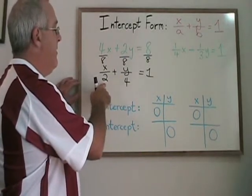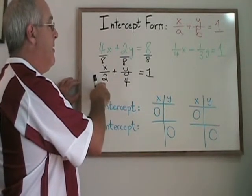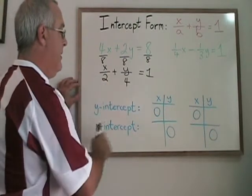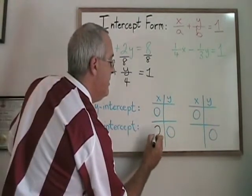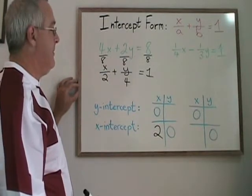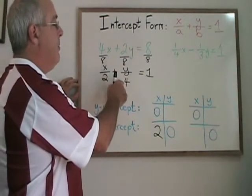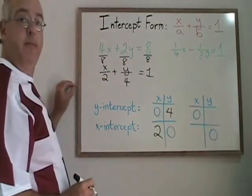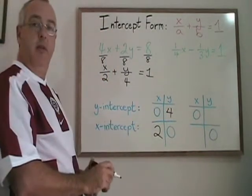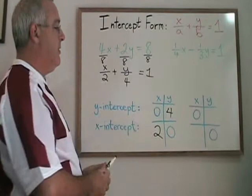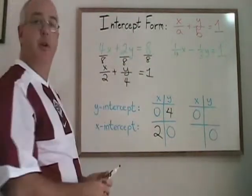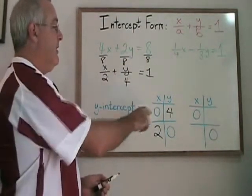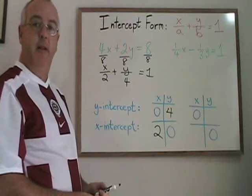A is therefore equal to 2, which means our x-intercept is equal to 2. So in my table of values, I can define the x-intercept like this. B is equal to 4, so my y-intercept is 4. We can use algebra and plug x equals 0 and y equals 0 into the original equation to verify that these are indeed the y-intercept and the x-intercept for this line.